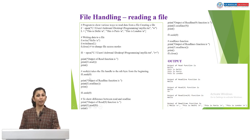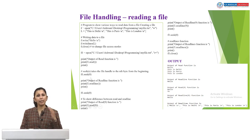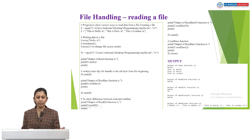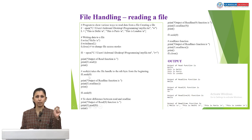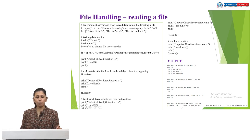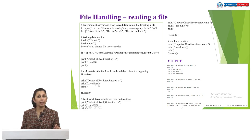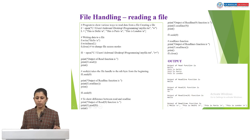Then I use f1.seek(0) — the seek function with value 0 brings the file pointer back to the starting position. It takes the file handle to the nth byte from the beginning; passing 0 means the beginning of the file. Then I print 'Output of the readline function is:' and call f1.readline() — it reads only one line. The first line was 'hello', so it prints only hello.